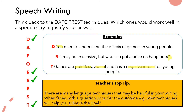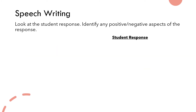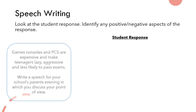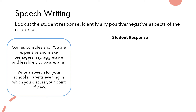Now what we're going to do is think back to the question we looked at a moment ago. The question is: 'Games consoles and PCs are expensive and make teenagers lazy, aggressive and less likely to pass exams. Write a speech for your school's parents' evening in which you discuss your point of view.' We're going to have a look at a student response attempting to answer this question. If you want to go away and write a response yourself, use this student response to identify some of the good parts and some of the bad parts as a starting point for your own writing.